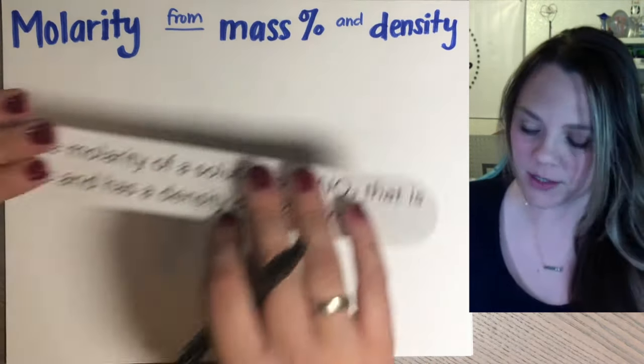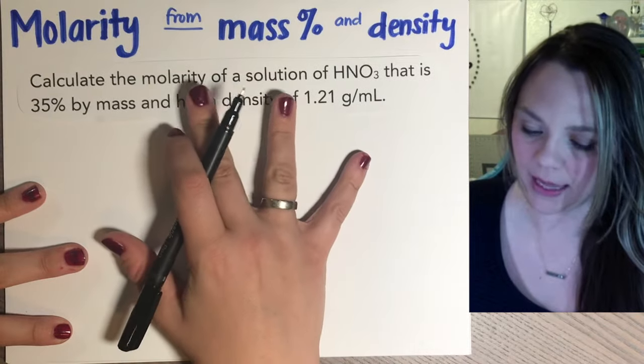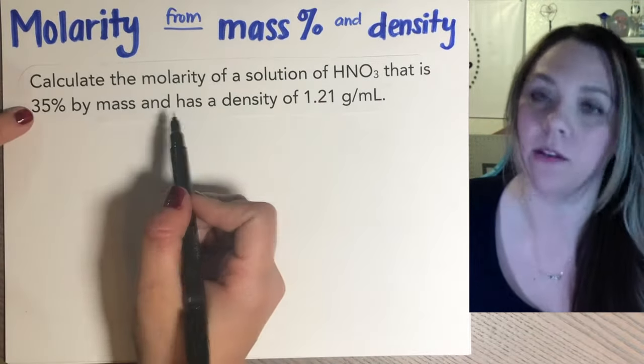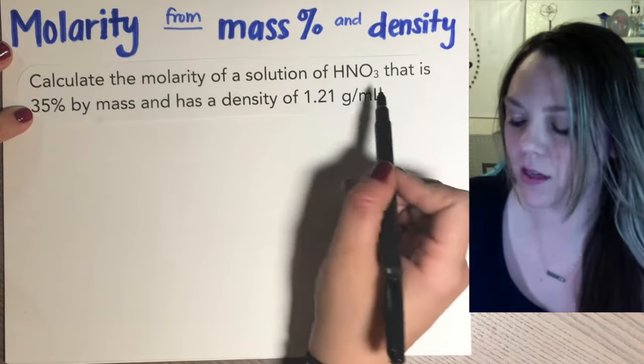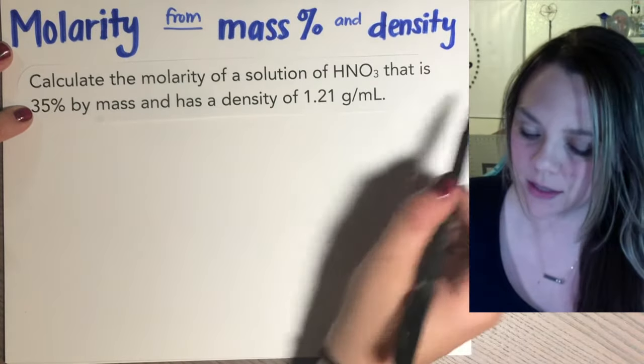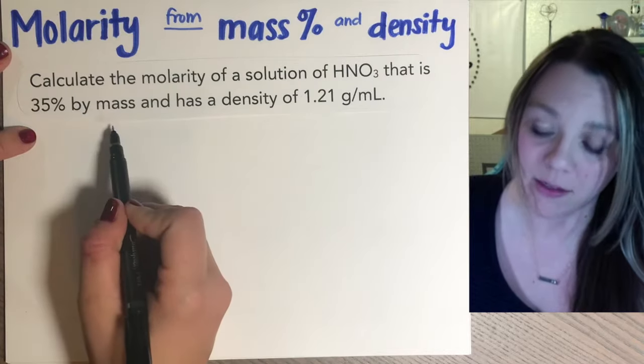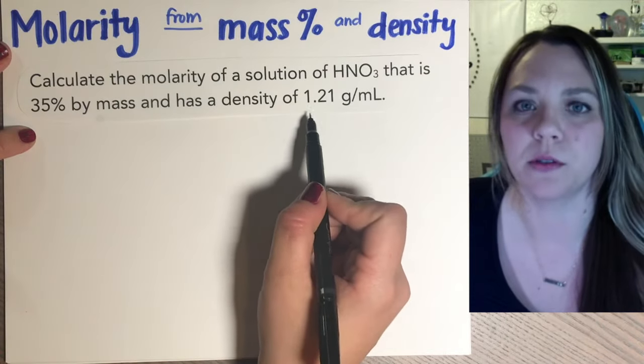You might be given a question like this. Okay, calculate the molarity of a solution of HNO3 or nitric acid that is 35% by mass and has a density of 1.21 grams per ml.